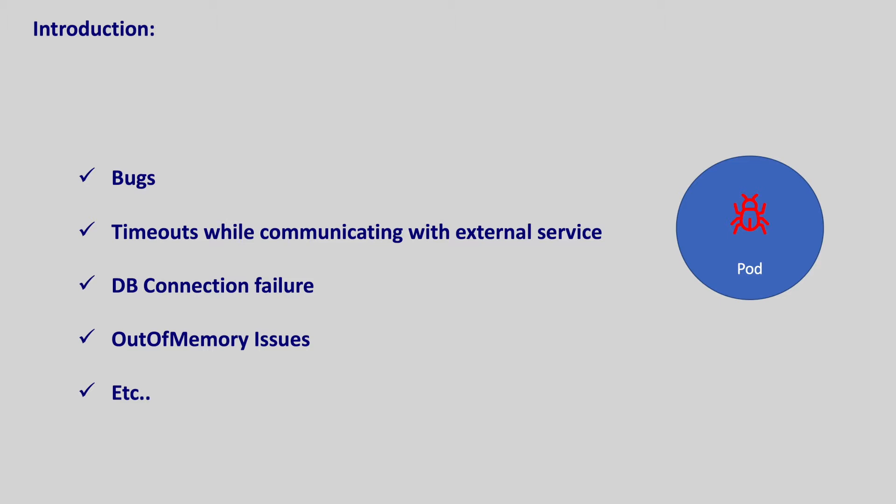If we don't heal these unhealthy pods, our service becomes unstable. Debugging such pods is also tricky as the pod status shows running but we don't get the expected output. In our Mongo pods deployed so far, MongoD is the main process. As long as the MongoD process is running, Kubernetes just treats the Mongo pod as healthy, no matter if the internal functionality is working correctly or not. How would we handle this scenario where pods are not working but they are not restarted either?